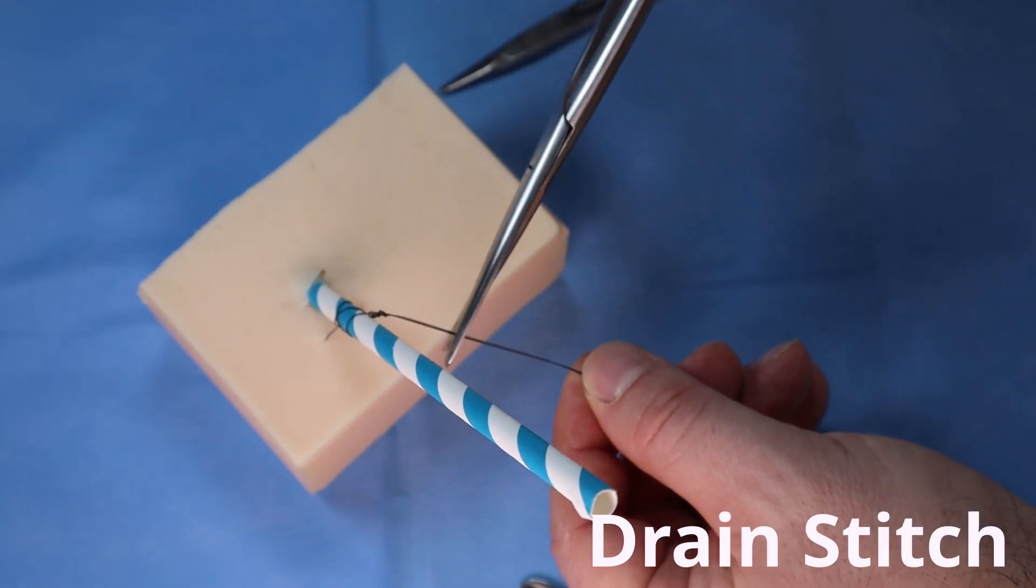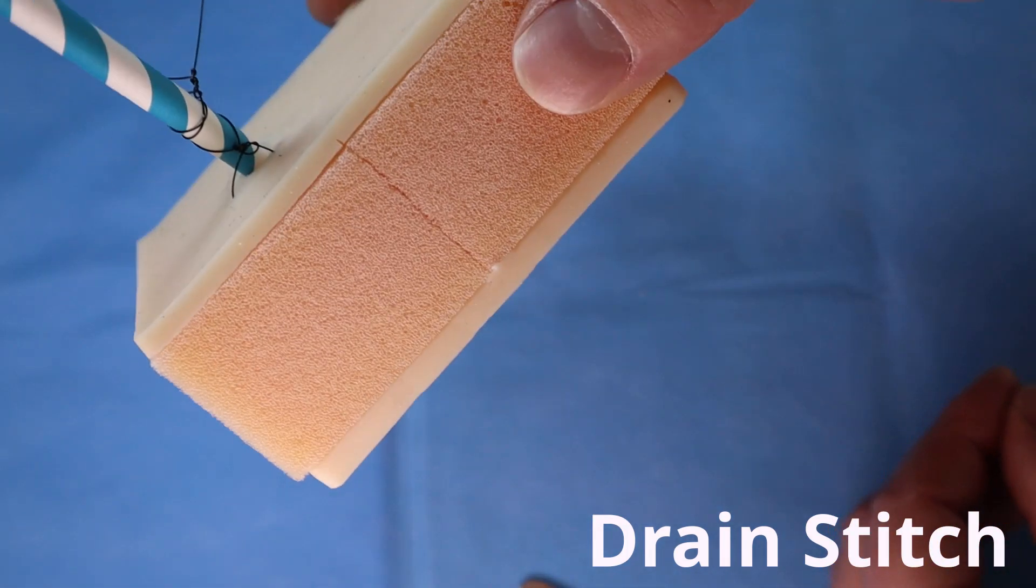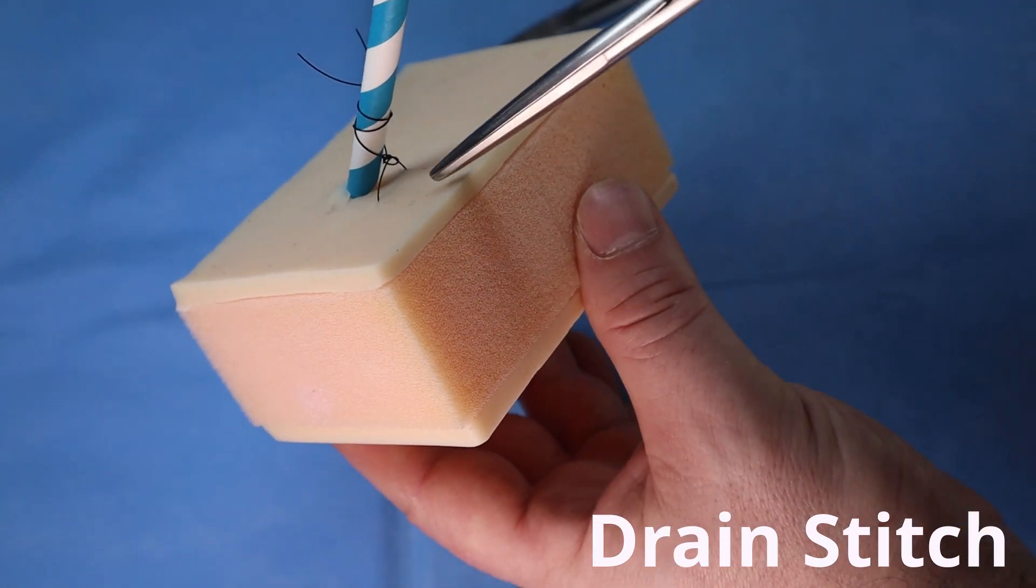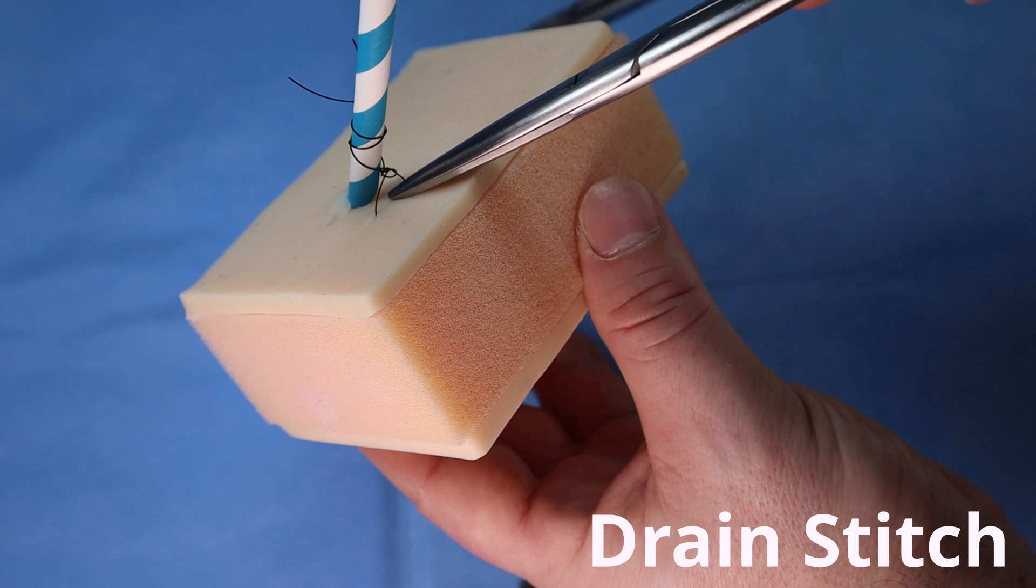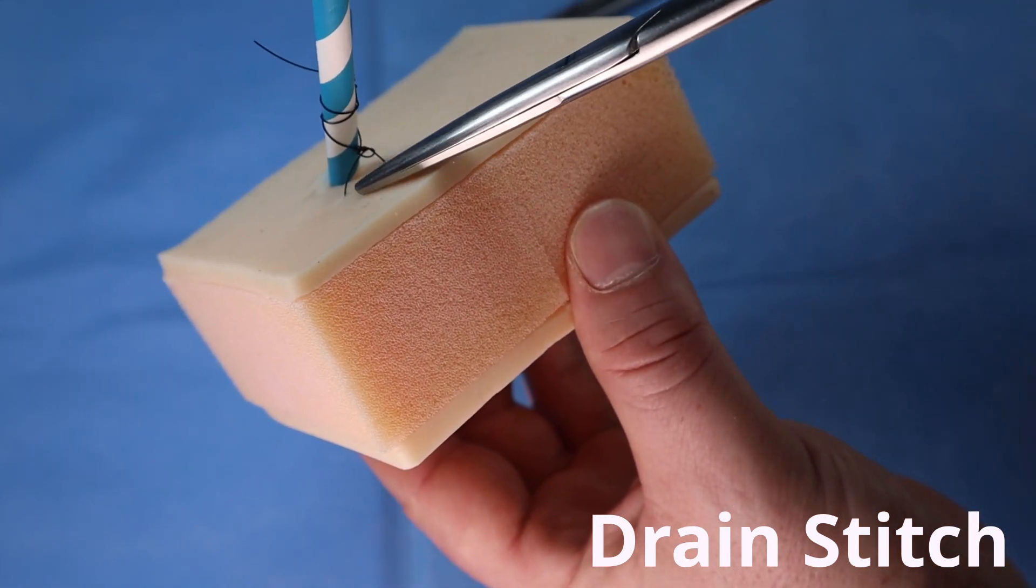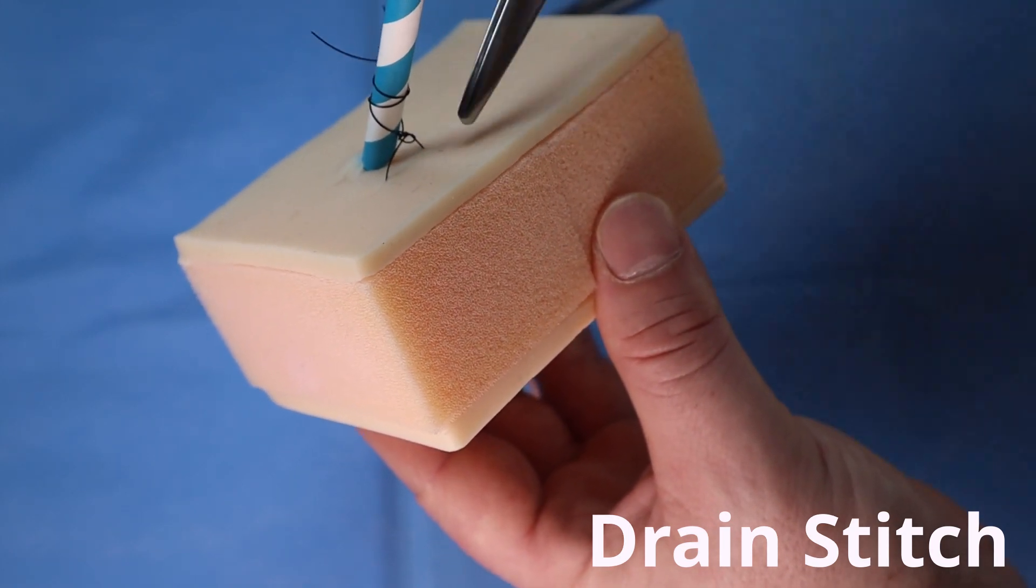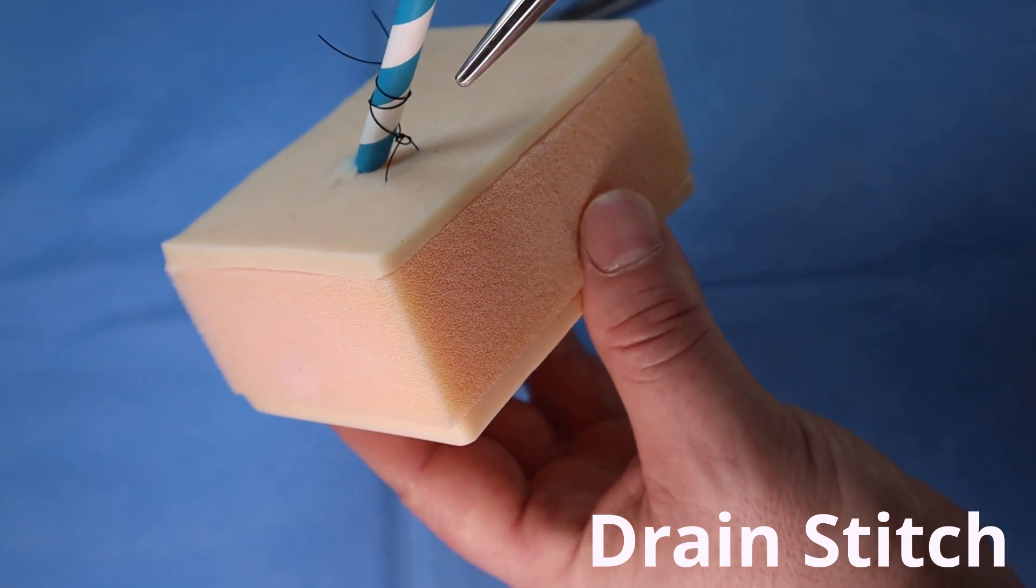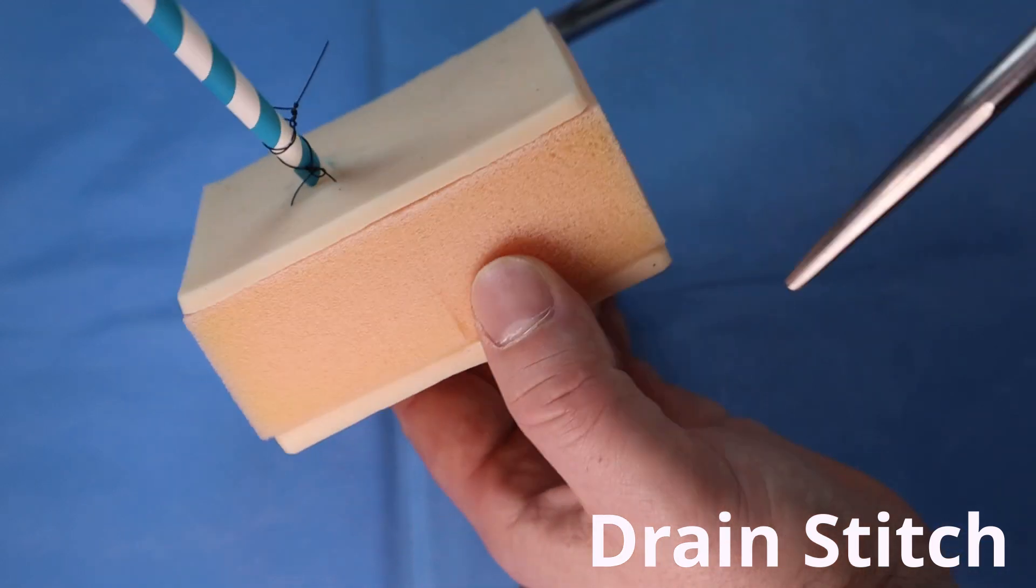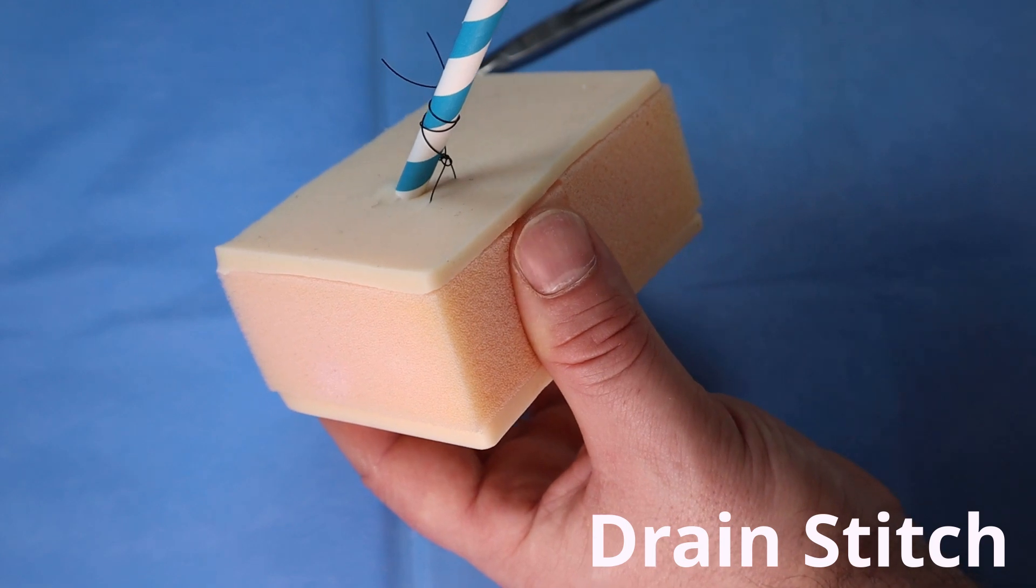I'm going to cut these tails extra long. So there you have it. What are we looking at? We're looking at a simple interrupted suture at the base here with a gap, so we're not strangulating the skin there. Wrap that around the drain in a Roman sandal style, and then I tied another knot at the top. That'll hold that drain in place until it's ready to come out.